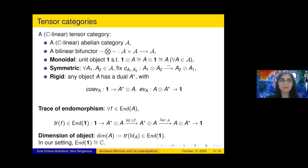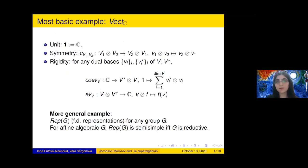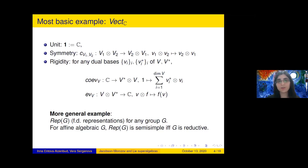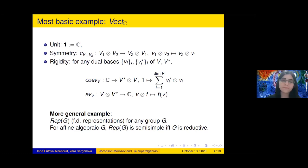The most basic example is the category of vector spaces, with the usual tensor product, unit object the one-dimensional vector space, symmetry given by the flip map, and rigidity given by the dual V* with the standard coevaluation and evaluation maps. In this case, trace and dimension are just the usual linear algebra notions. Finite dimensional vector spaces form a tensor category.